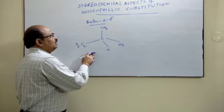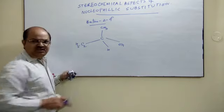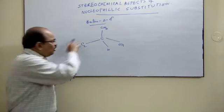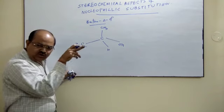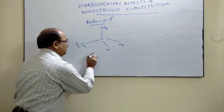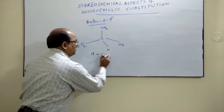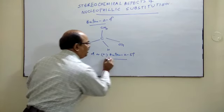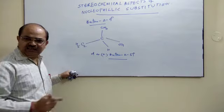Suppose the solution of this Butan-2-ol rotates the plane-polarized light in the clockwise direction, then it is your D or plus Butan-2-ol. This is your D(+) Butan-2-ol.